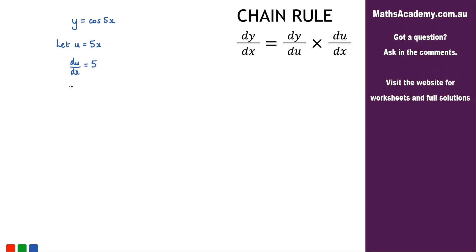So now what I've got is that y is equal to cosine of u and if I differentiate this I will get dy by du. Now differentiating cosine will give negative sine of u.